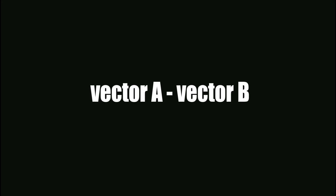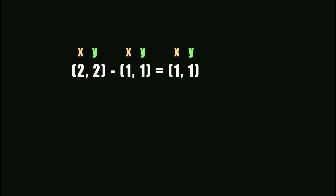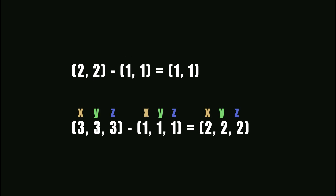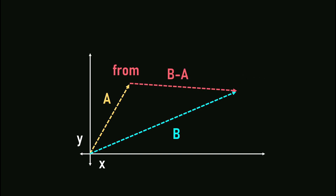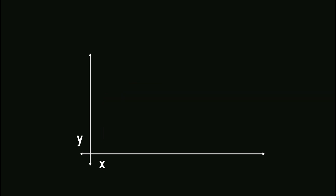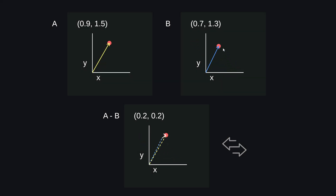Let's talk about the other operation: minus. When you do vector A minus vector B, it's the same process — x minus x and y minus y. In 3D, you also do z minus z. Visually, it's slightly different from adding. In the case of A minus B, you're getting a vector from B to A. If you go the other way, B minus A is like saying from A to B. So with subtraction, A minus B is not the same as B minus A. And it's a recurring theme again — this vector, when the length and direction are identical, isn't all that different from this vector.